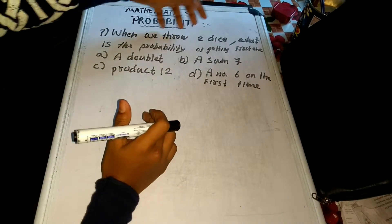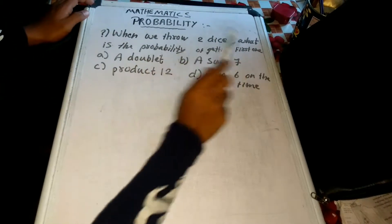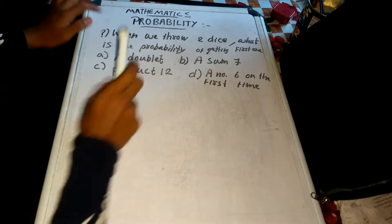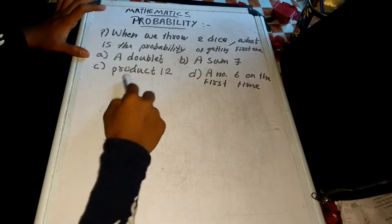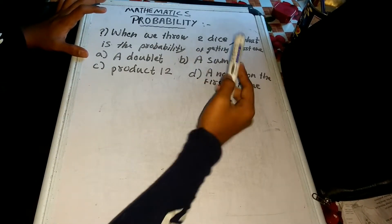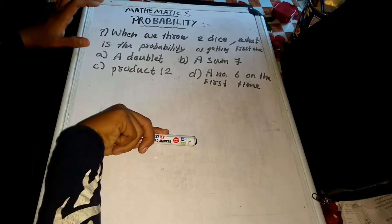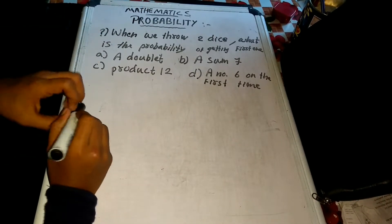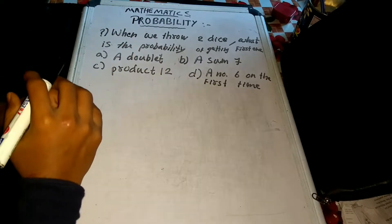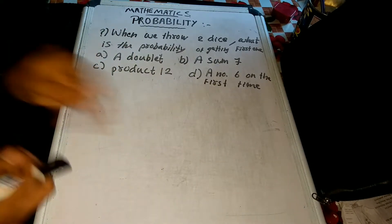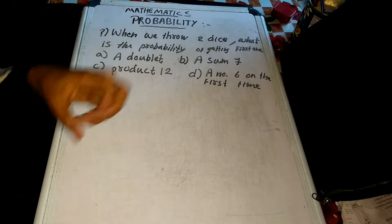When we throw 2 dice, what is the probability of getting: first, a doublet; then the sum 7; then the number 6 on the first die. So we have to throw a dice a few times.